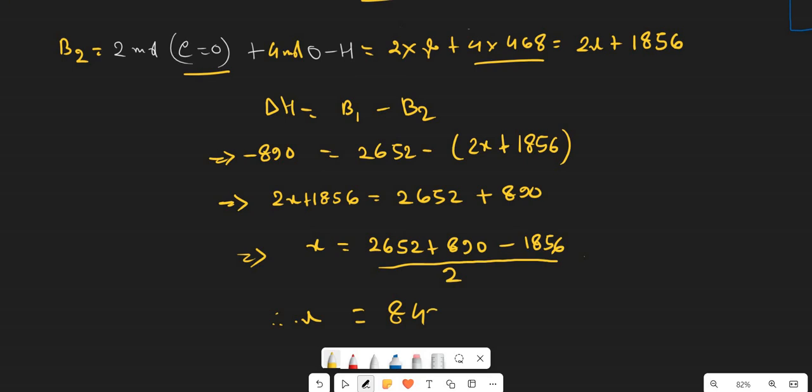So I have 843 kilojoules per mole. That's the answer, which is the first one.